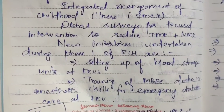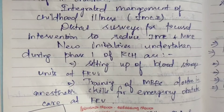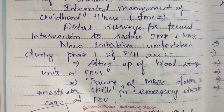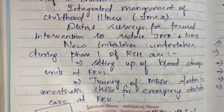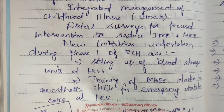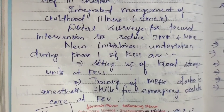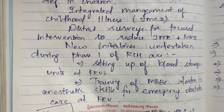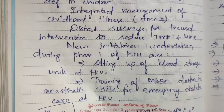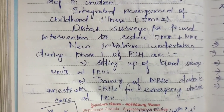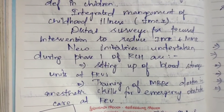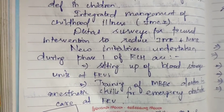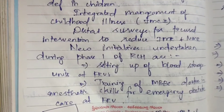New initiatives undertaken during Phase 1 of RCH include setting up blood storage units at first referral units, and training MBBS doctors in anesthetic skills for emergency obstetric care at the First Referral Unit (FRU), particularly where no dedicated anesthetist is available.